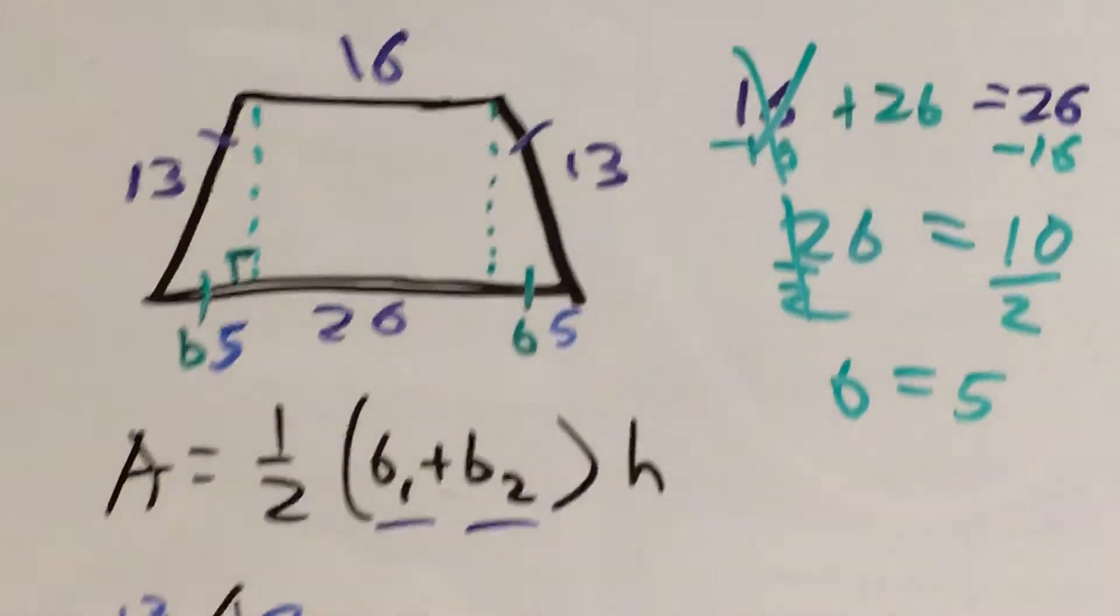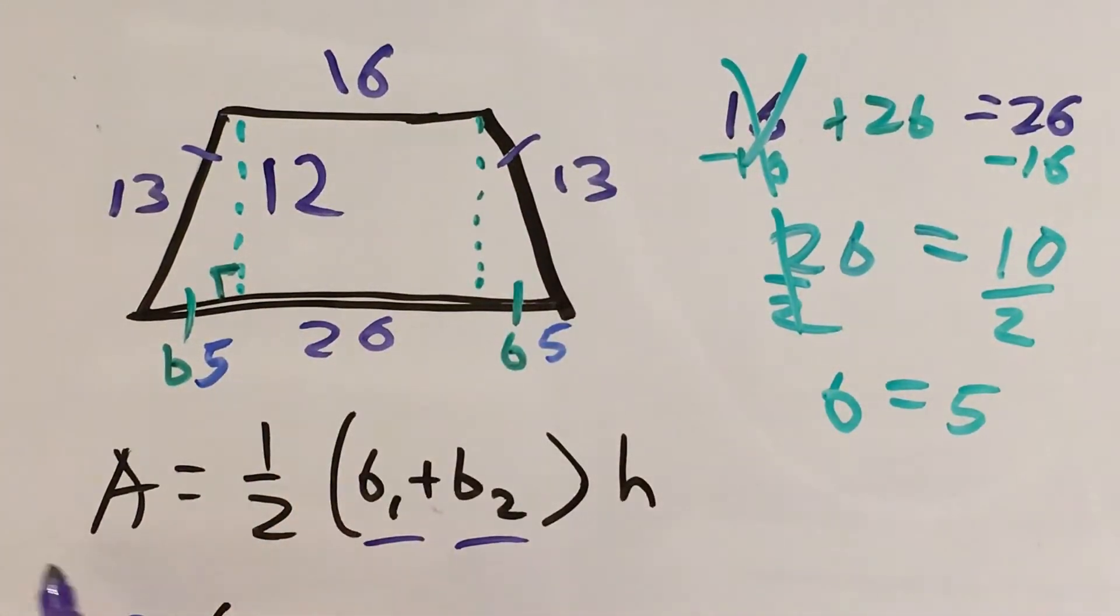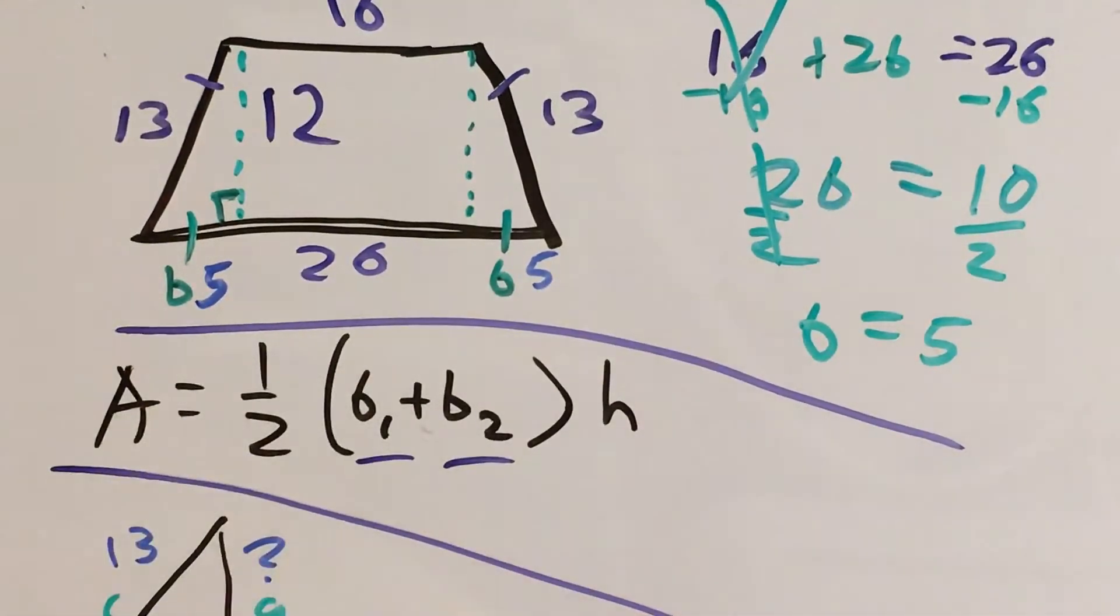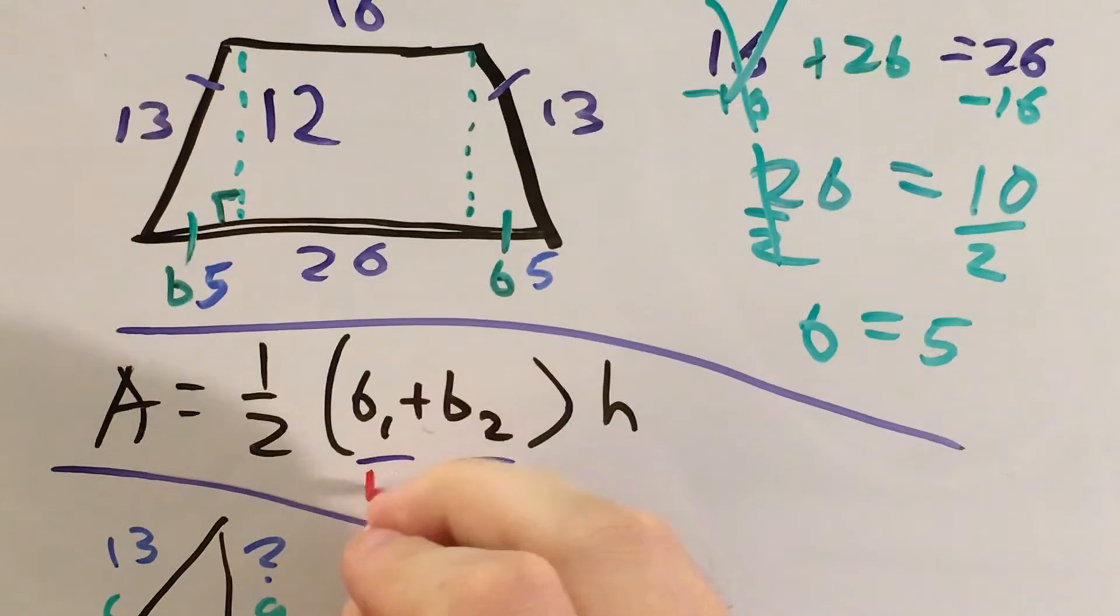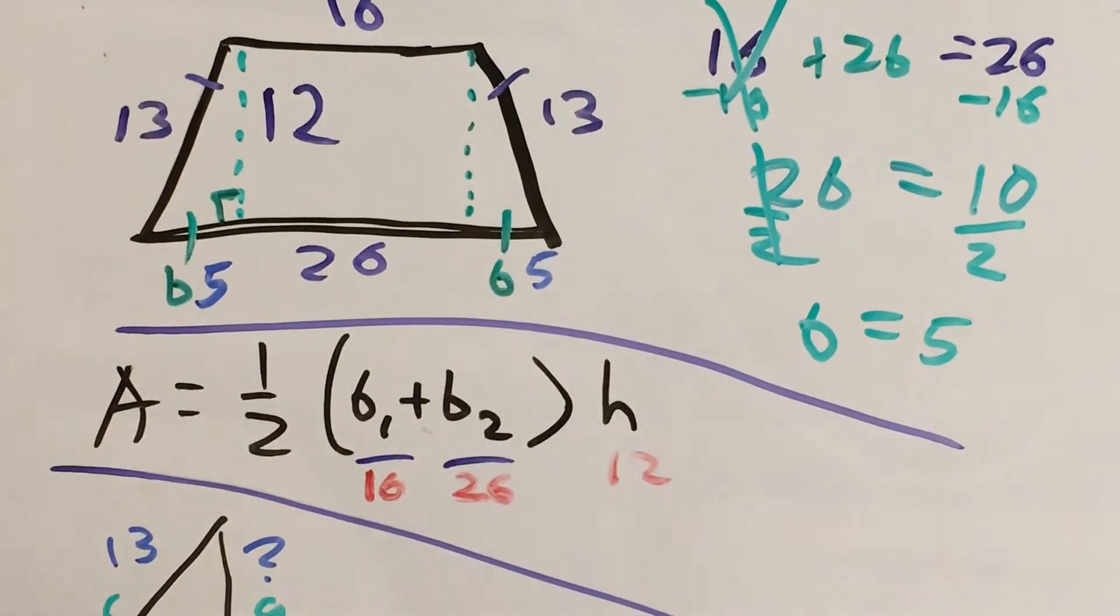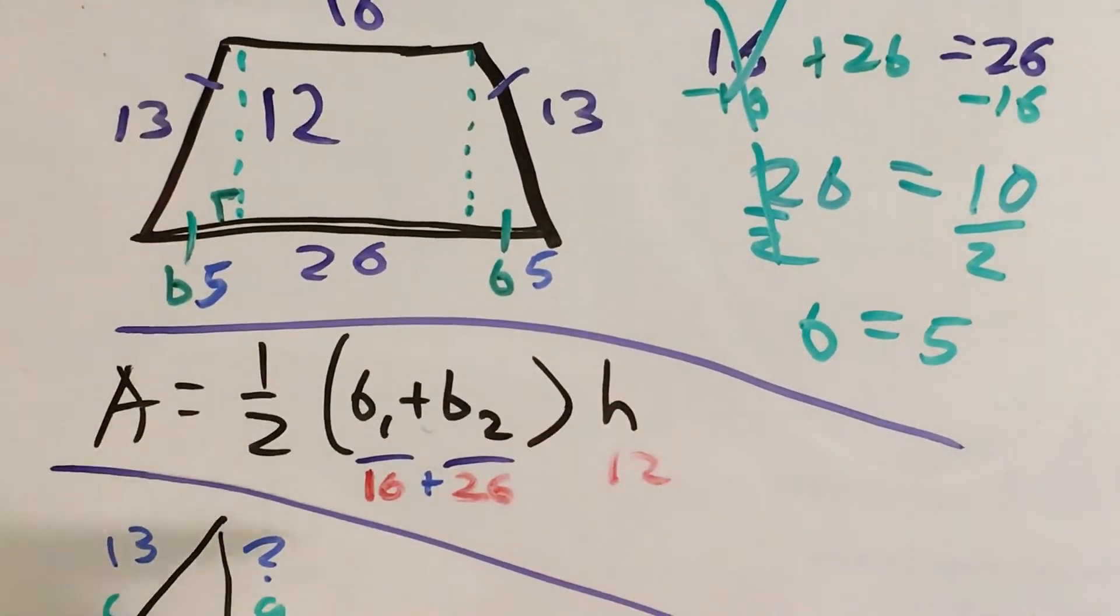So now that I know that my height of this trapezoid is 12, I have all the information I need to use this area formula. And I know that, let's see, let me get a red marker for this. I know that my bases are 16 and 26, and I know my height is 12. So my first step is to evaluate my parentheses and figure out 16 plus 26.